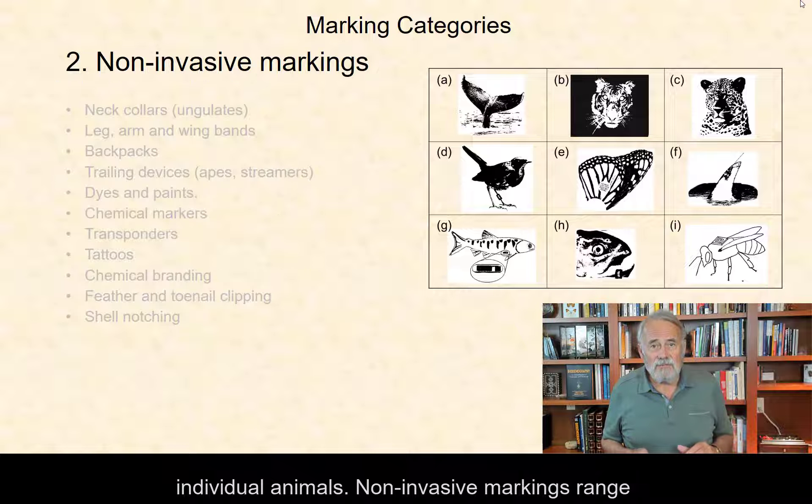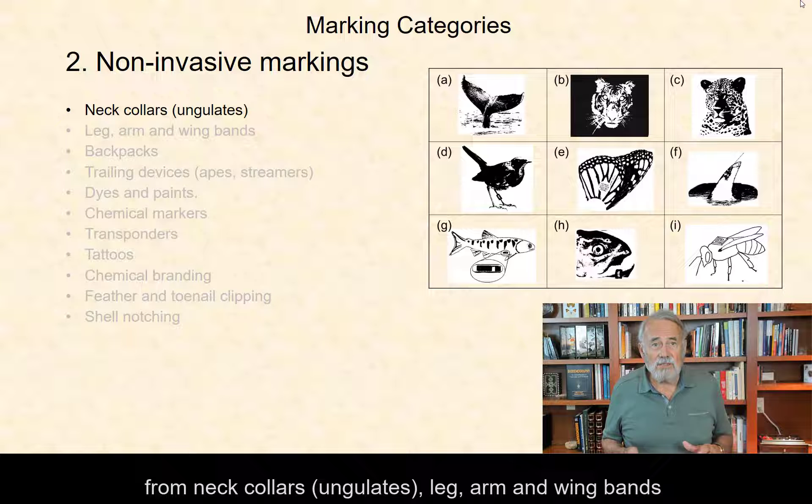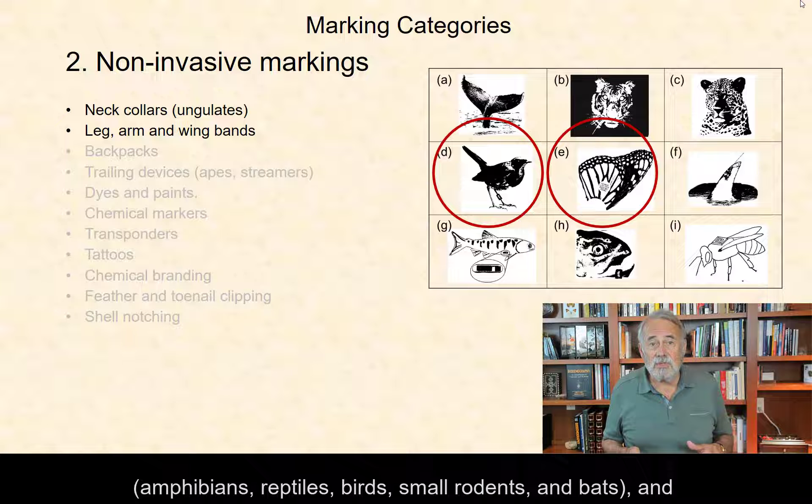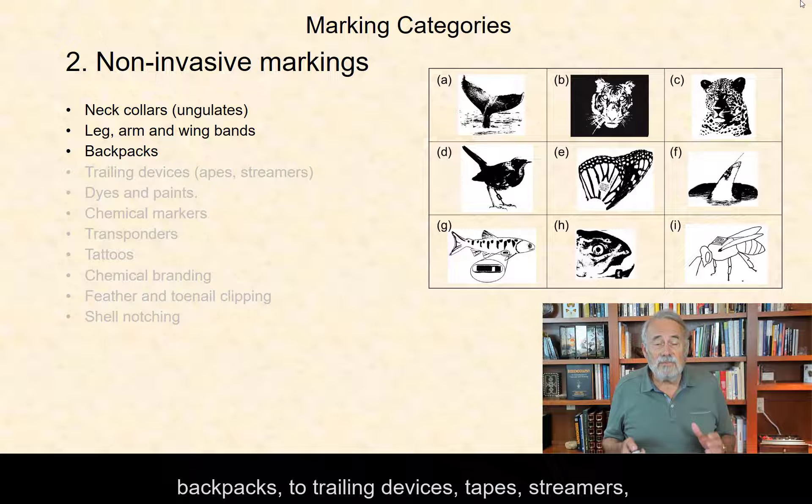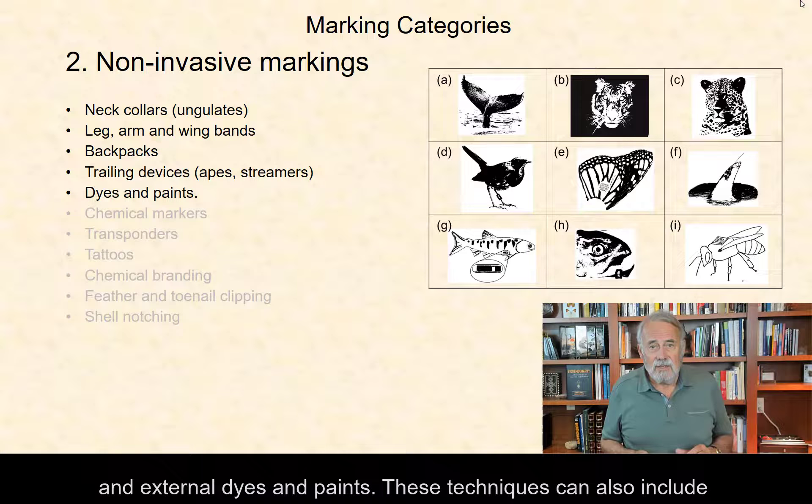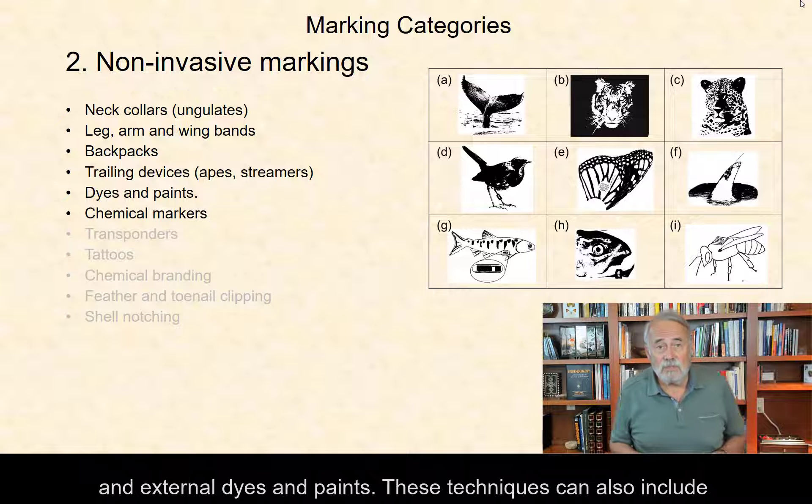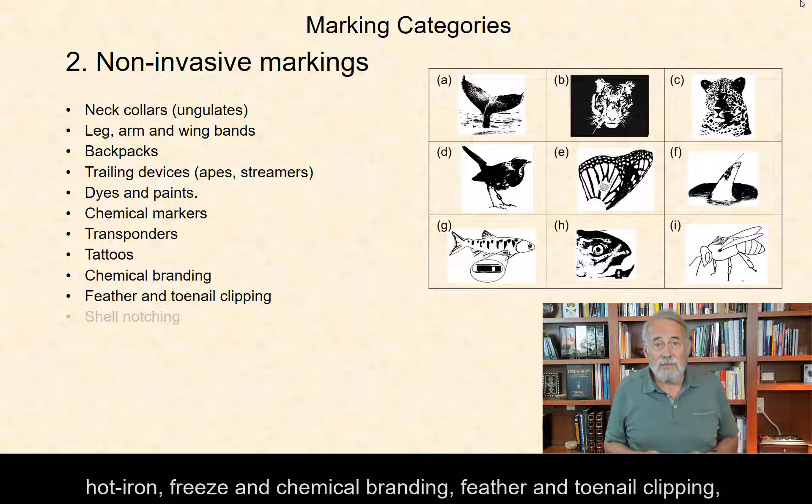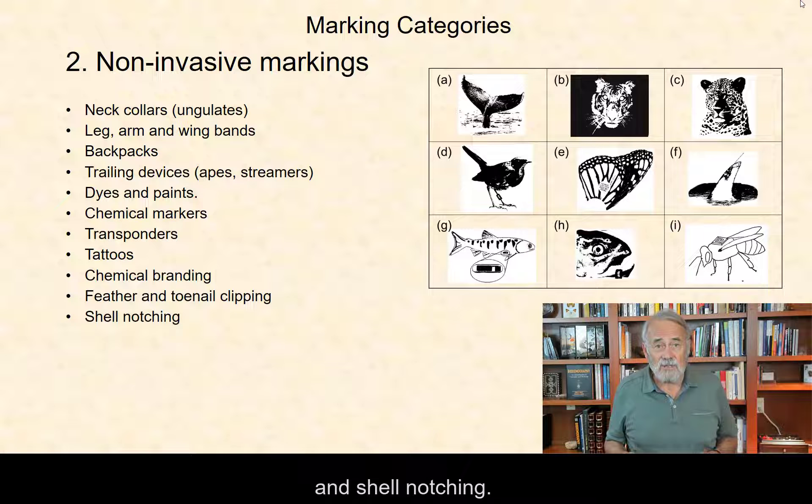Non-invasive markings range from neck collars for ungulates, leg, arm, and wing bands for amphibians, reptiles, birds, small rodents, and bats, backpacks, trailing devices, tapes, streamers, and external dyes and paints. These techniques can also include chemical markers, transponders, tattoos, ear, jaw, and wing tags, hot iron freeze and chemical branding, feather and toenail clipping, and shell notchings.